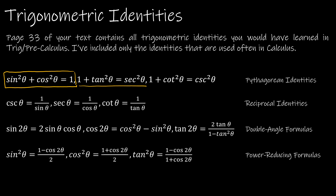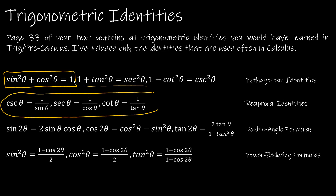Reciprocal identities are used all the time. The reciprocal of sine is cosecant, the reciprocal of cosine is secant, and the reciprocal of tangent is cotangent. Quite often we'll need to do some replacements in equations — replacing tangent with one over cotangent, or vice versa.